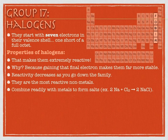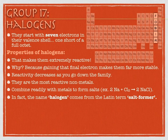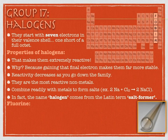The very name 'halogen' comes from the Latin term for 'salt-former.' The halogens would happily react with things that want to give up electrons — that's why chlorine and sodium make such a fine pair. The sodium wants to give up electrons and the chlorine wants to gain them. That's what's going to be called an ionic bond, but we'll talk more about that later.